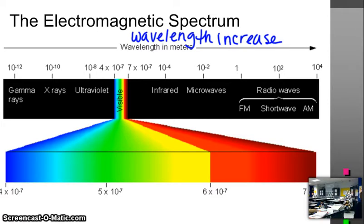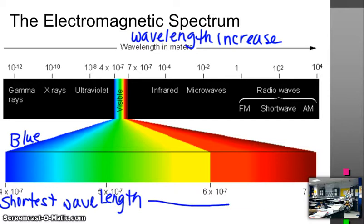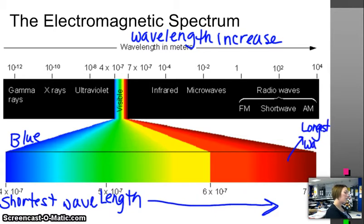What they've done down here is they've pulled out the ROY-GBIV spectrum, the rainbow: red, orange, yellow, green, blue, indigo, violet, from the visible light spectrum. Blue radiation has the shortest wavelength. And as you go this way, the wavelength increases. So red radiation, red light, has the longest wavelength.